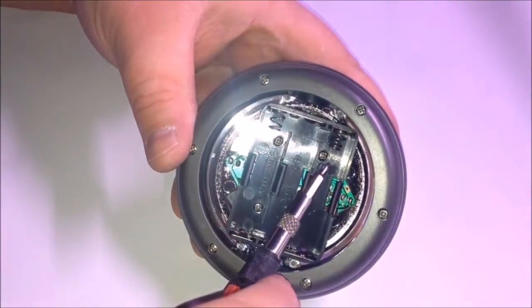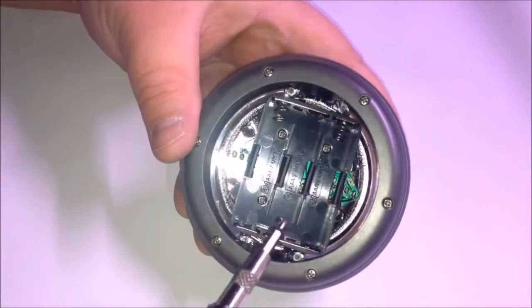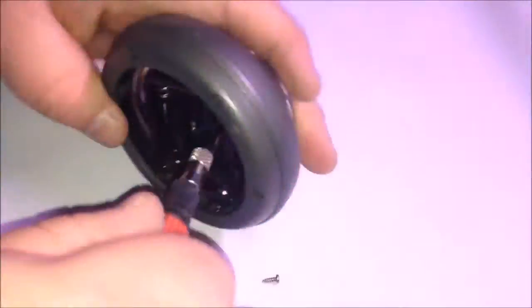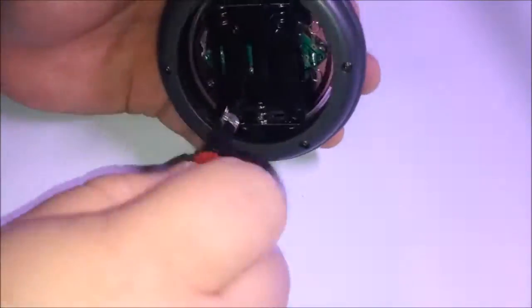We're going to take out the screws that hold the battery plate in place. Yours may have more. Some of these pop lights can have different configurations.